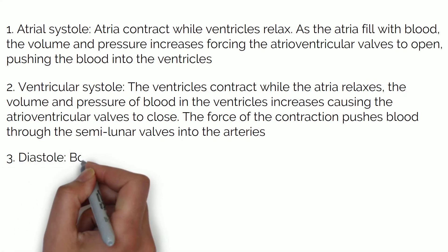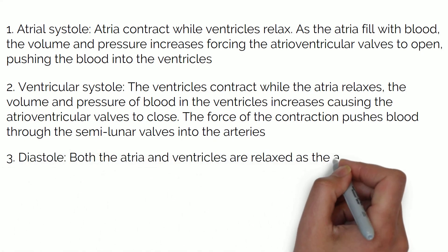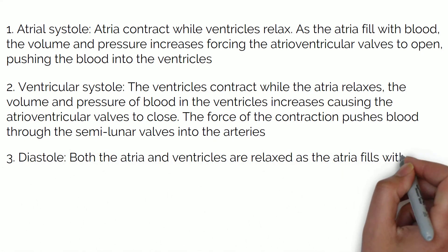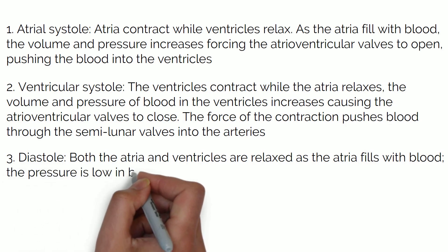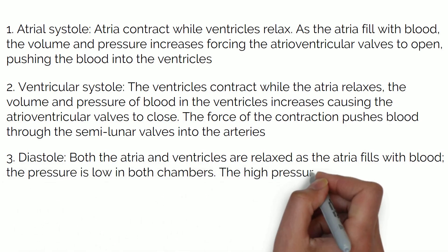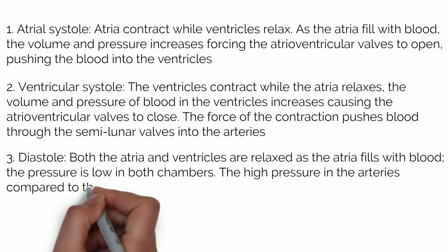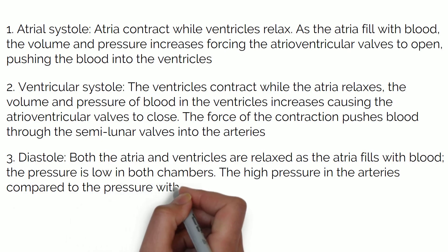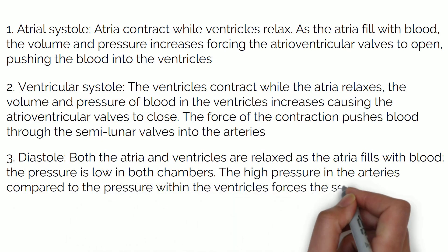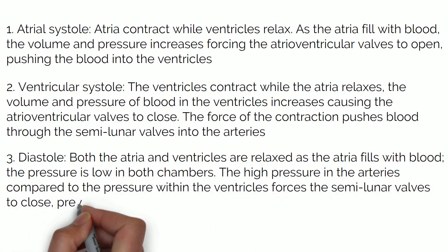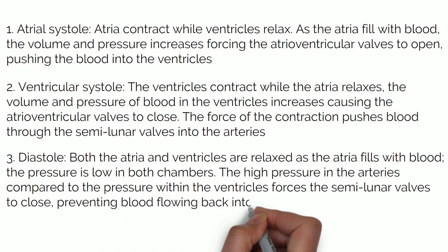Stage 3: Diastole — both the atria and ventricles are relaxed as the atria fills with blood, and the pressure is low in both chambers. The high pressure in the arteries compared to the pressure within the ventricles forces the semilunar valves to close, preventing blood flowing back into the ventricles.